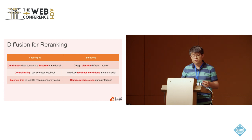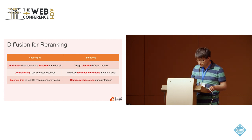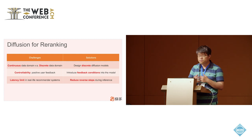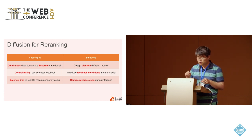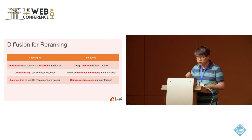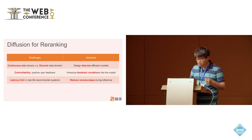We provide three solutions to these challenges. First, we design discrete diffusion models so they can be applied to discrete data domains. Then we introduce feedback conditions into the model so it learns how to generate under positive feedback conditions. Third, to reduce the latency limit, we reduce the number of reverse steps during inference.